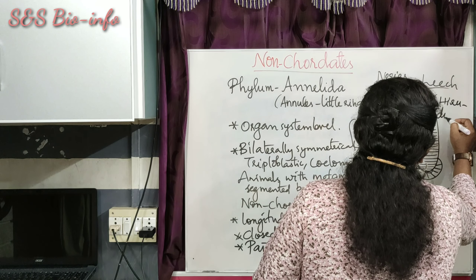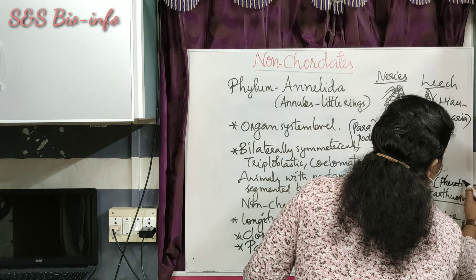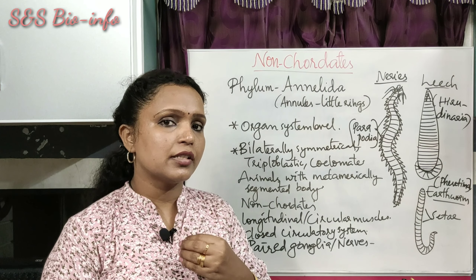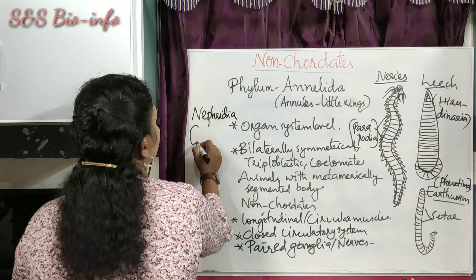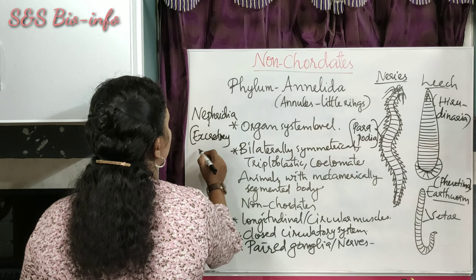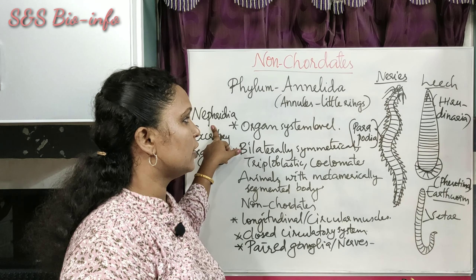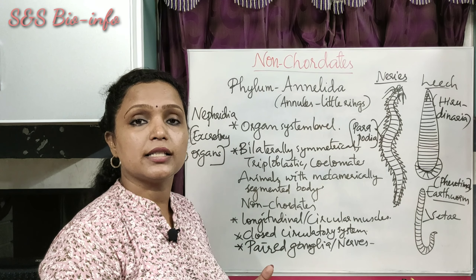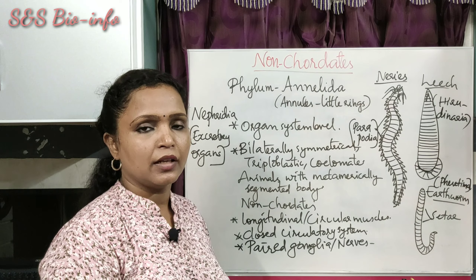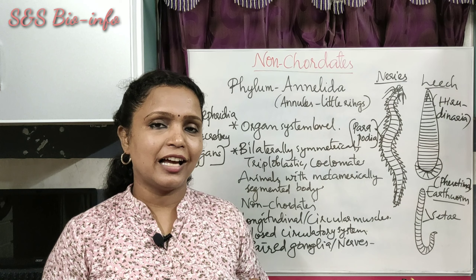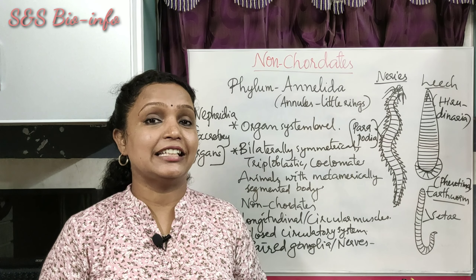Annelids also possess a well-defined reproductive system. Some are dioecious (e.g., Nereis) and some are monoecious/hermaphrodite (e.g., leech — Hirudinaria, and earthworm — Pheretima). They have a well-developed excretory system with nephridia as excretory organs, which perform both excretion and osmoregulation. These animals reproduce sexually with internal fertilization. With this I conclude my session — thank you and have nice moments.